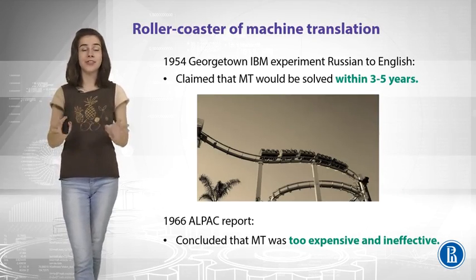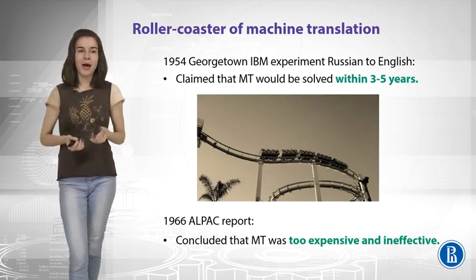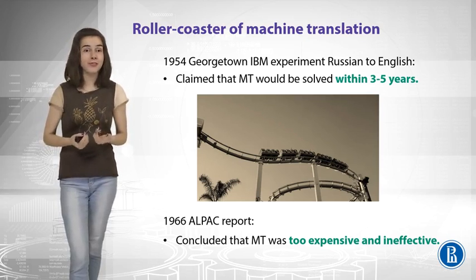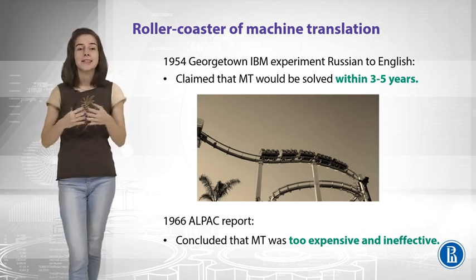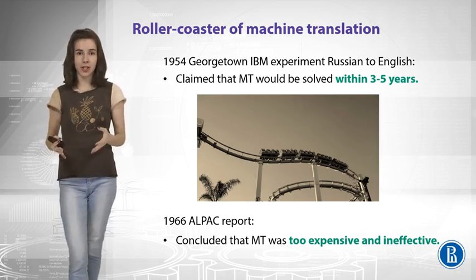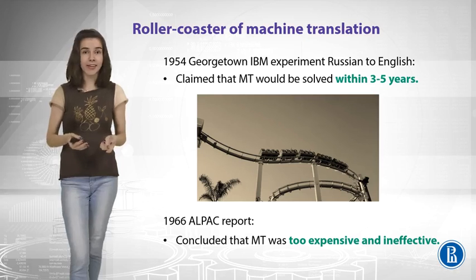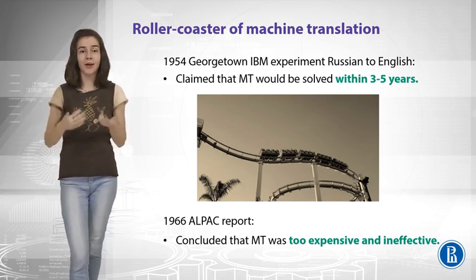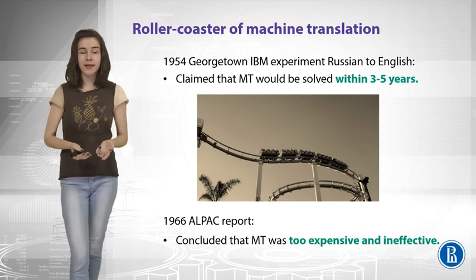Let me show you a brief history of the area. In 1954, there were great expectations: IBM experiments translated 60 sentences from Russian to English, and researchers said machine translation could be fully solved in just three to five years. They worked hard on it, but after many years concluded it was not that easy.